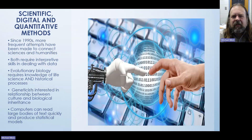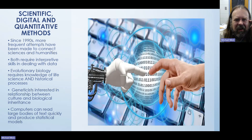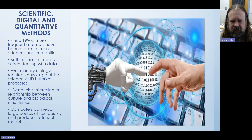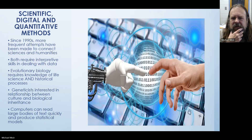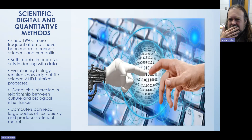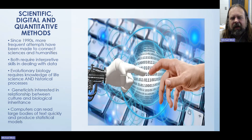This set of methods that starts emerging in the early 2000s is an attempt to bridge that gap between the sciences and the humanities. When we talk about these scientific, digital, and quantitative methods, we're talking about two sets of human experience — the sciences and the humanities — that both require interpretive skills in dealing with data. For example, evolutionary biology requires knowledge of life science and also of historical processes. Geneticists are increasingly interested in the relationship between human cultures and biological inheritance — the extent to which our environment and cultural upbringing affects the genes we pass along to our descendants.